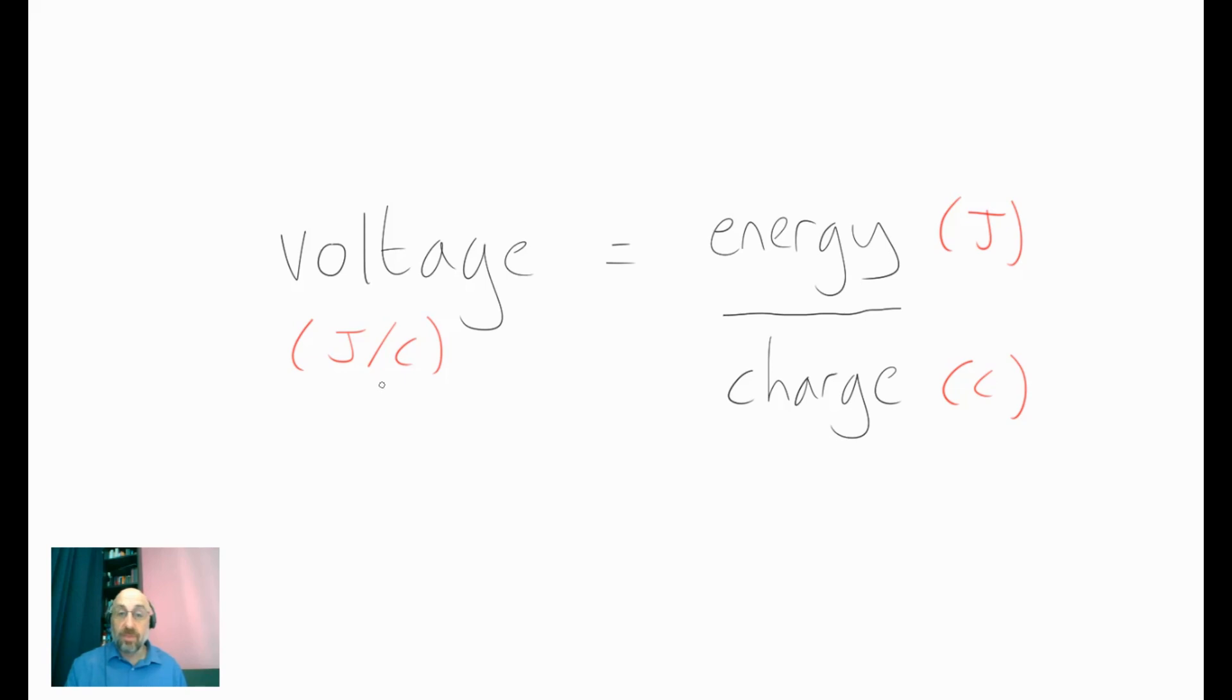Over time, though, people have abbreviated a joule per coulomb, and they've called it a volt. So one volt simply equals one joule per coulomb. It's actually an abbreviation.